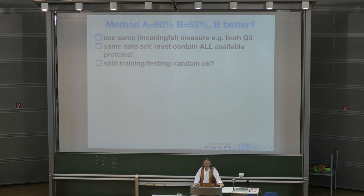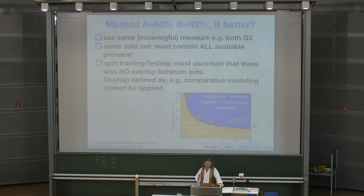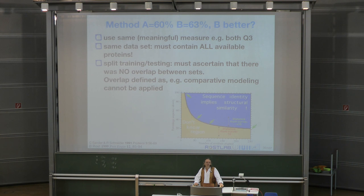Back to the question: is that all right? No, it is not, because there's something important here. We have to watch out that there is no overlap between testing and training. You would essentially start with a data set of 100 proteins that have no overlap, but you have to check that this is the case.